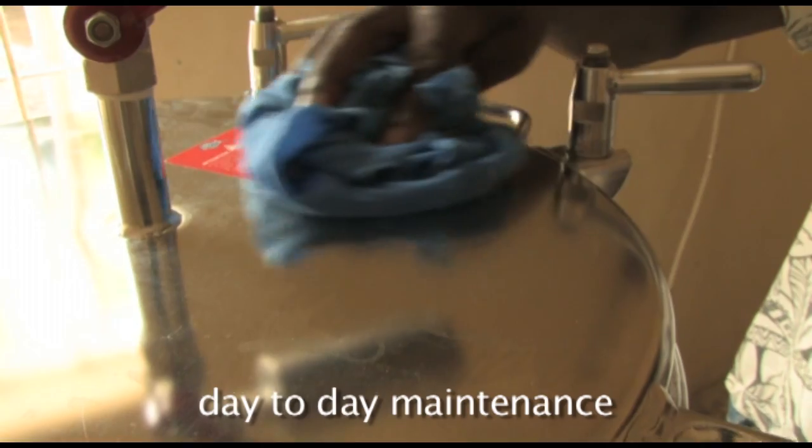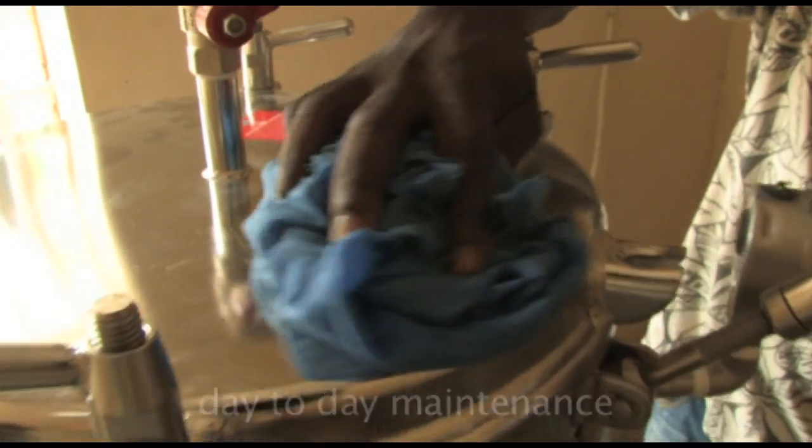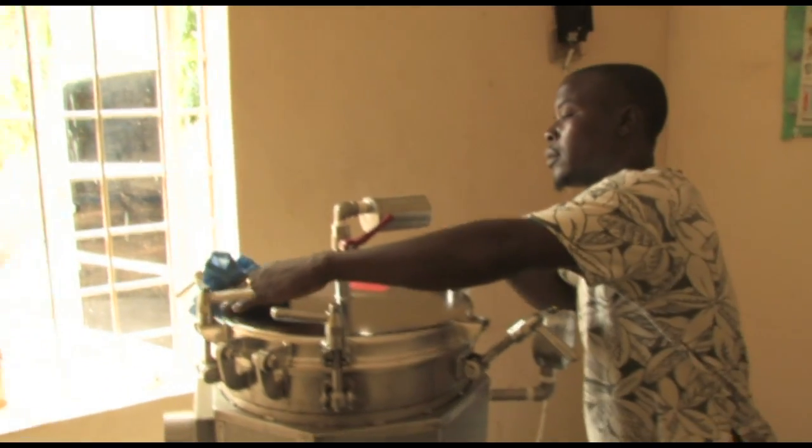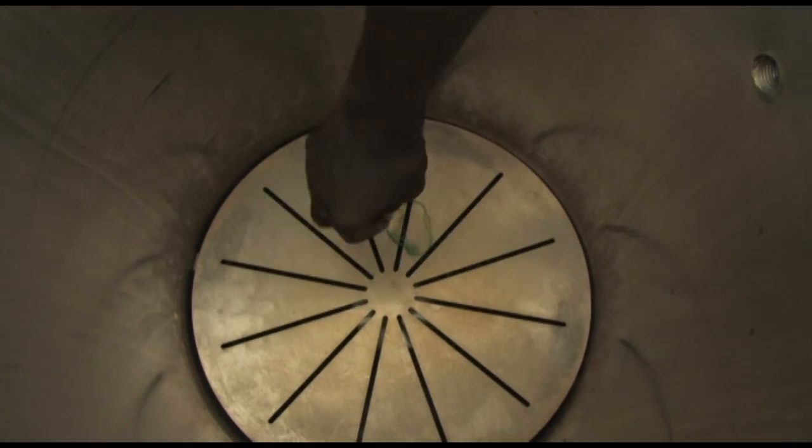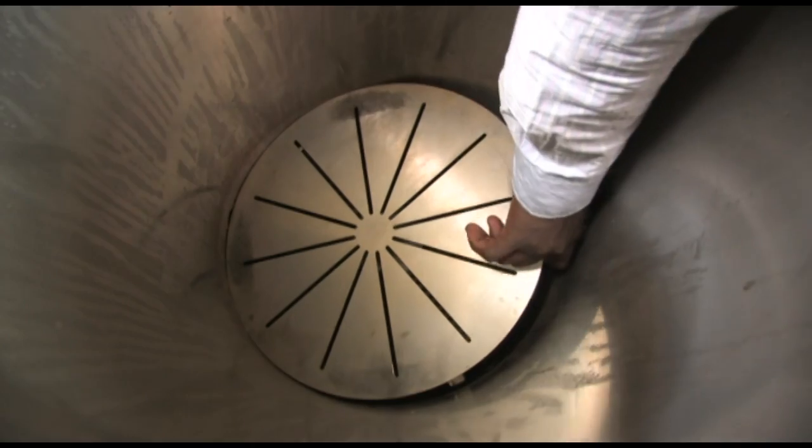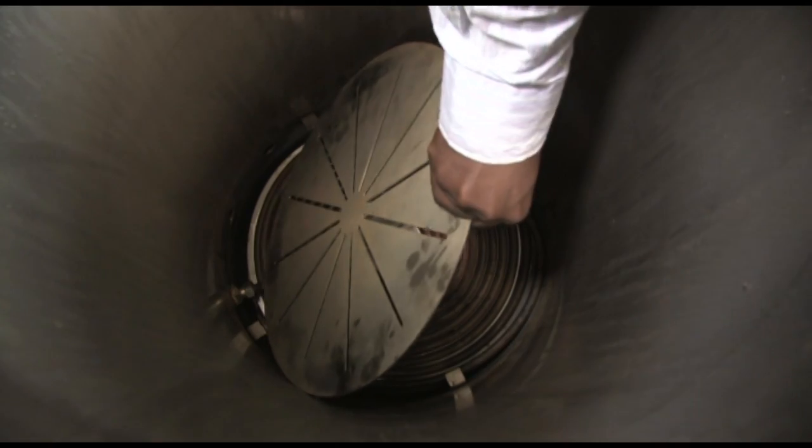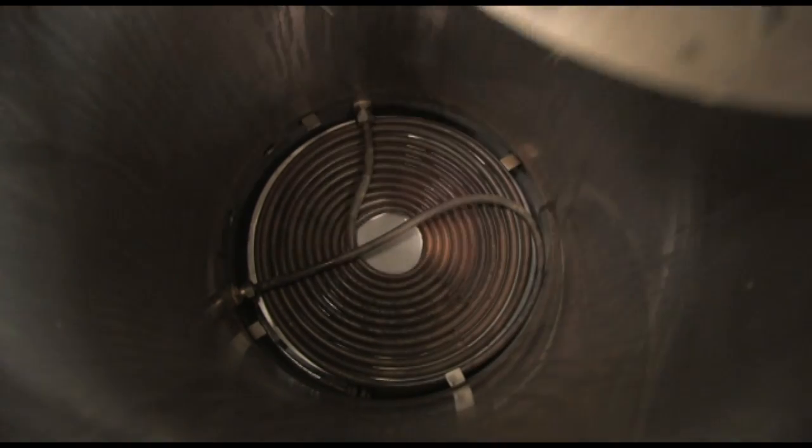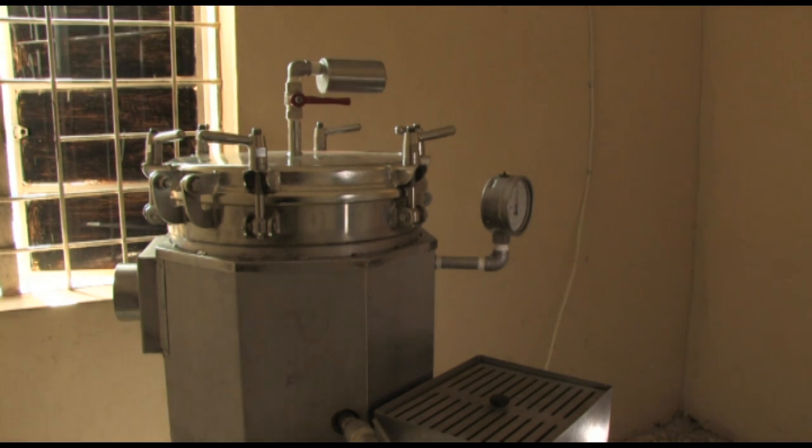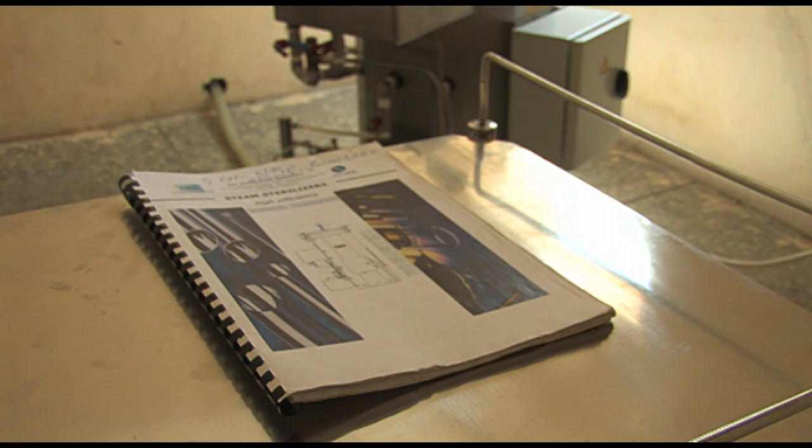Autoclaves must be regularly maintained. General cleaning should be done with a clean, dry cloth. Do this at the end of the working day. Ensure that the bottom is free from any textile fluff. To check this, remove the bottom plate in the sterilizing chamber. The seal on the lid must be checked for damages. Read the instruction manual for information on day-to-day maintenance.